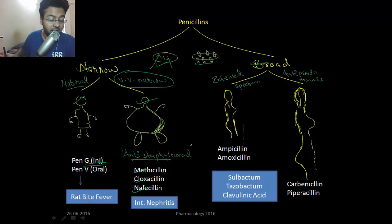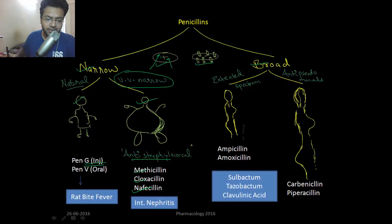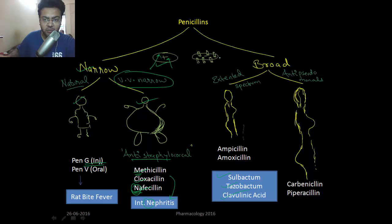Examples of anti-staphylococcal penicillins are methicillin, cloxacillin, and nafcillin — excellent for Staphylococcus aureus. However, a new problem is MRSA, methicillin-resistant Staphylococcus aureus. The main side effect of nafcillin and methicillin is interstitial nephritis.